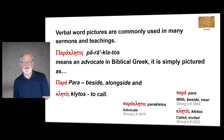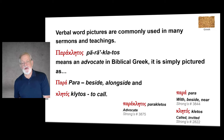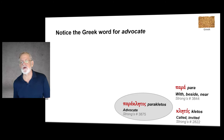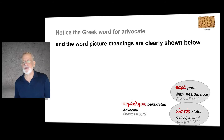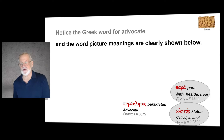Verbal word pictures are commonly used in many sermons and teachings. Parakletos means an advocate. In biblical Greek, it is simply pictured as para — beside, alongside — and kletos — to call. Notice the Greek word for advocate: para means with, beside, near; kletos means called, invited. The word picture meanings are clearly shown.